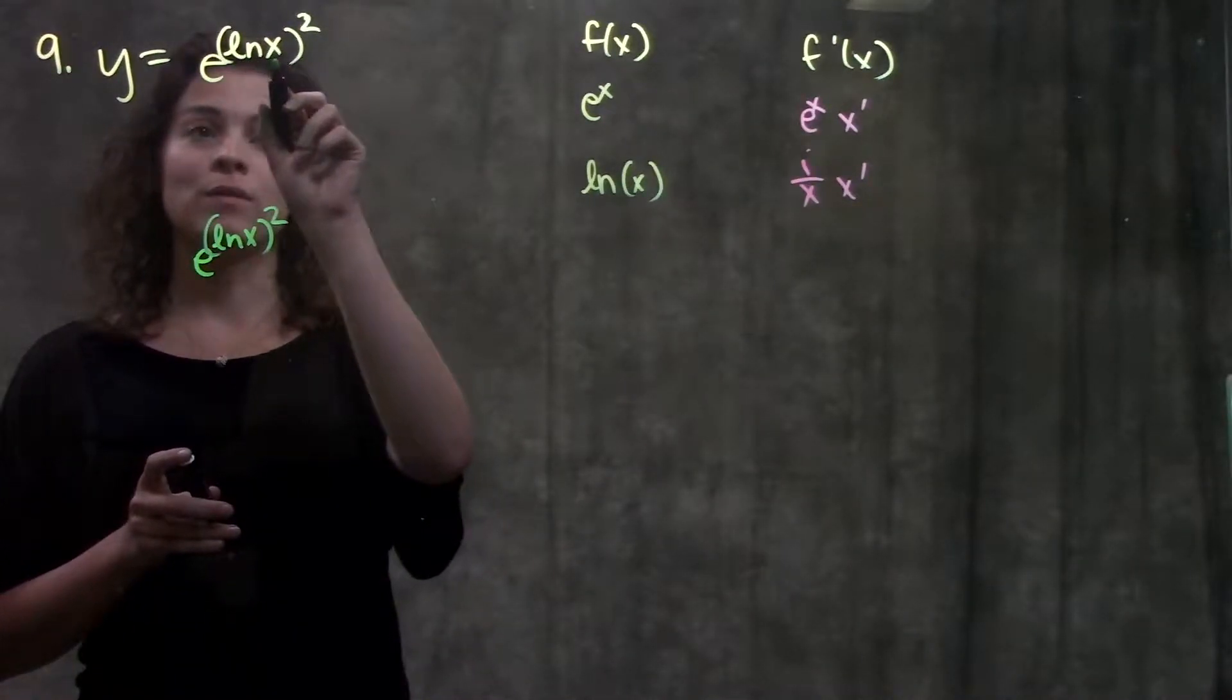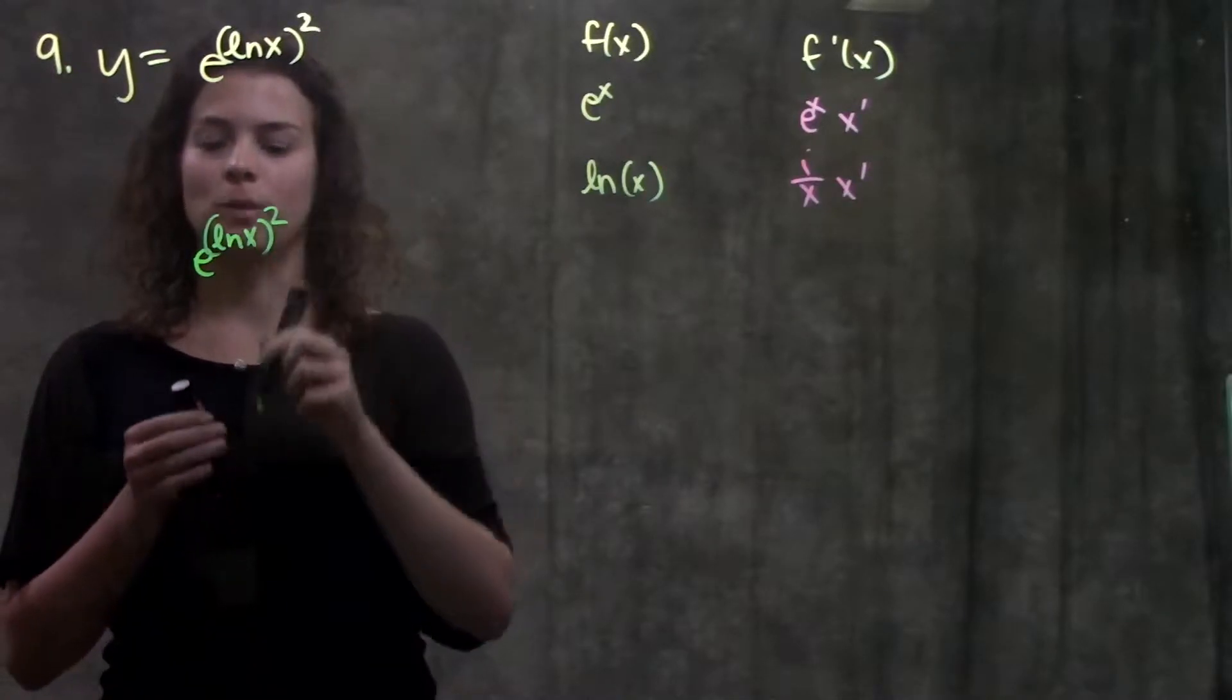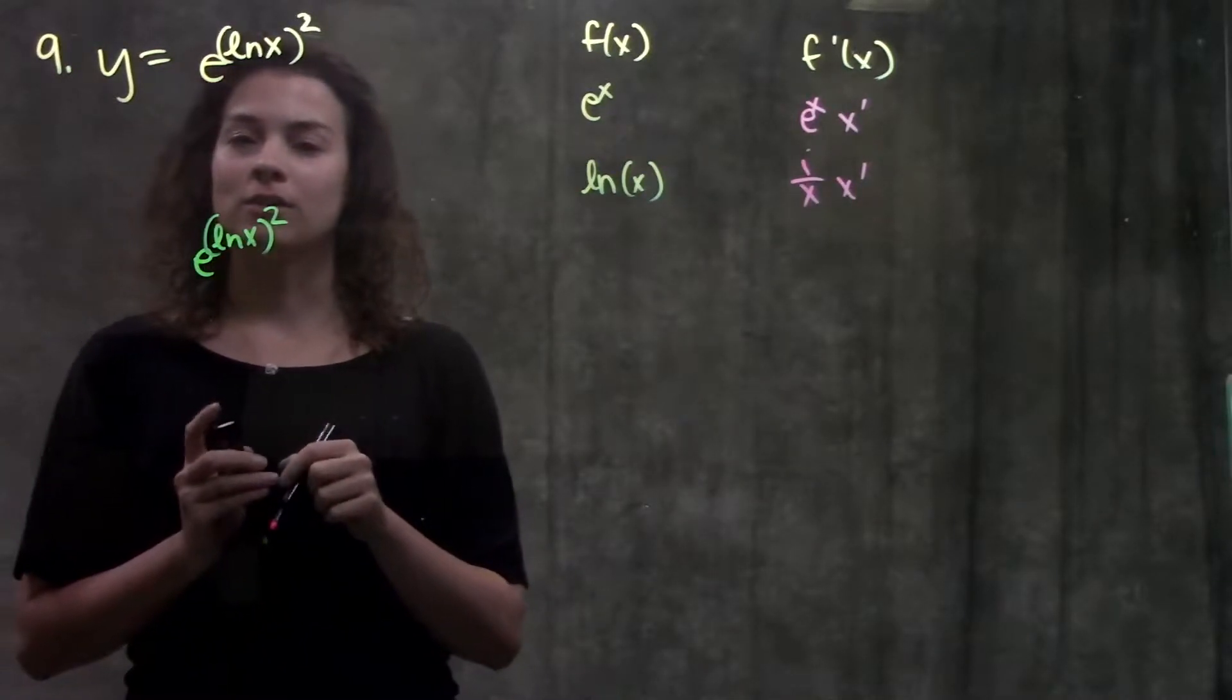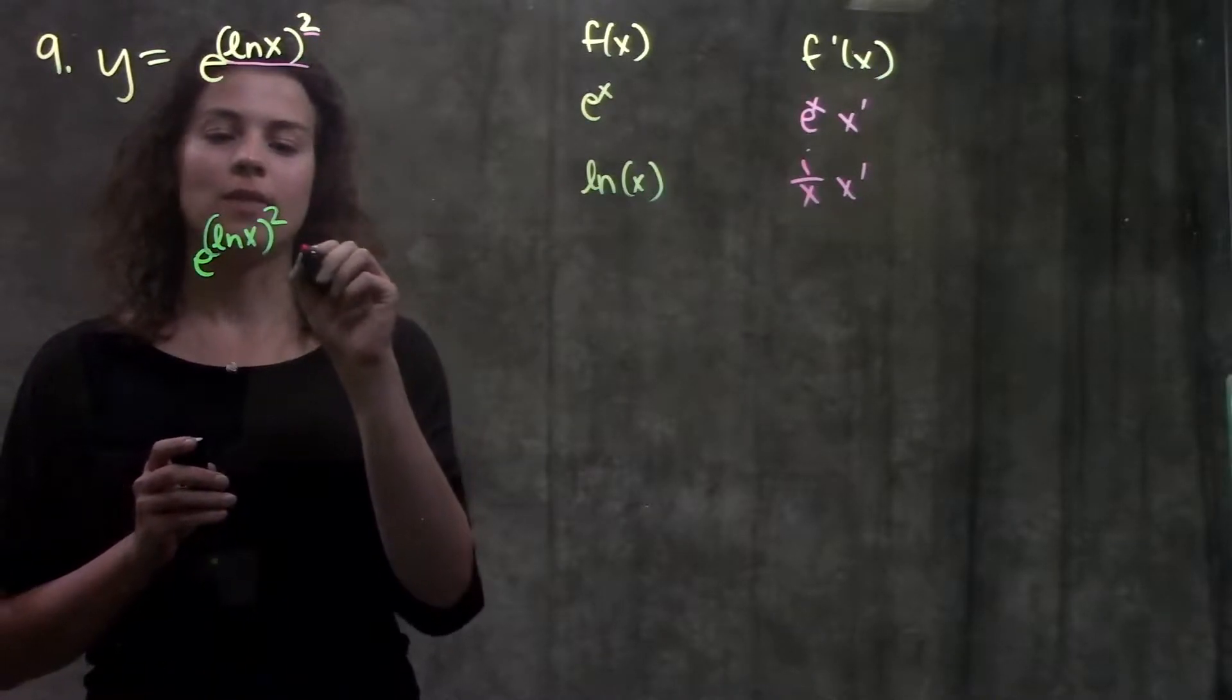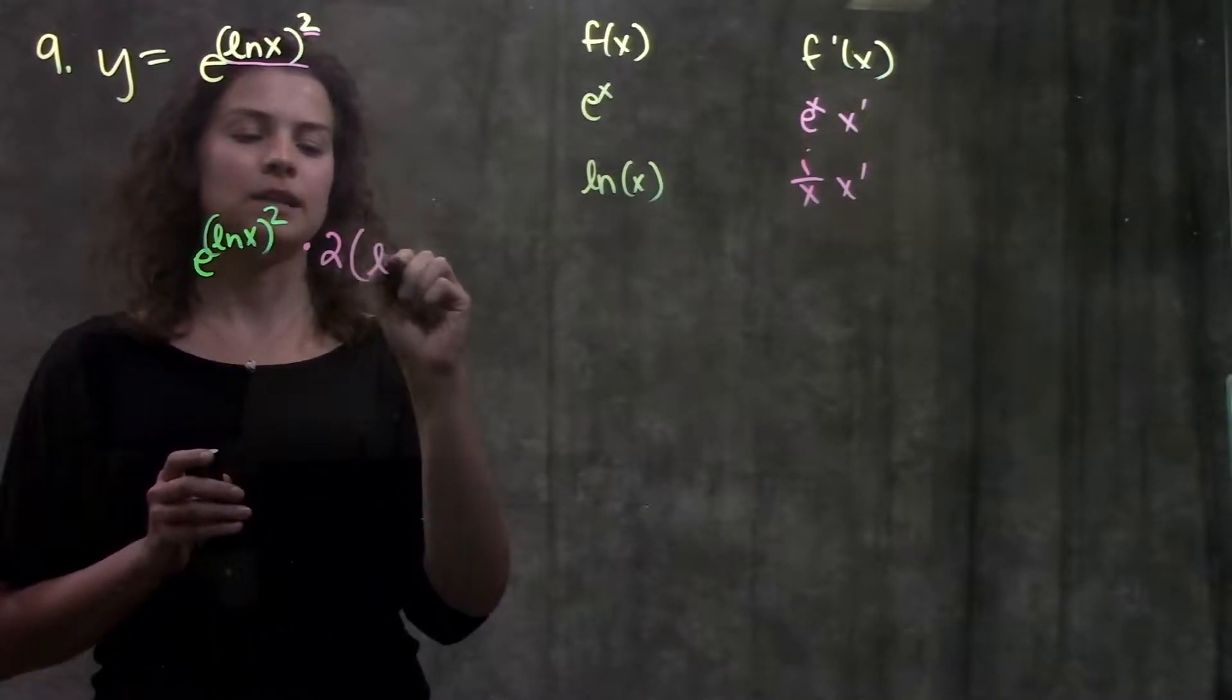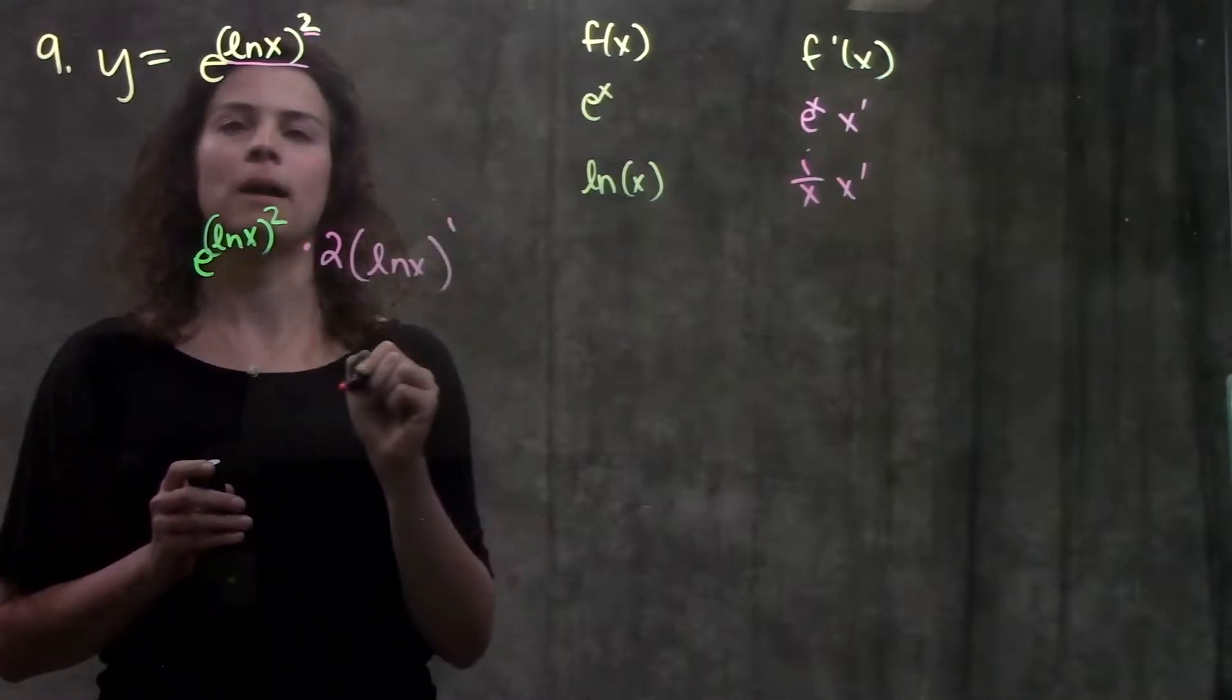Now I'm looking at the derivative of ln x, all that squared. This is going to use some chain rule. My outermost function here is something squared. The derivative of something squared is 2 times the inside, raised to the first power.